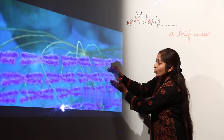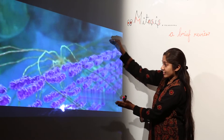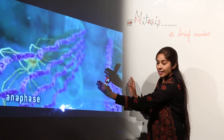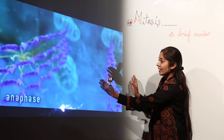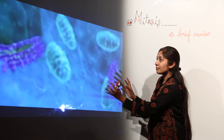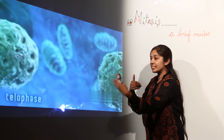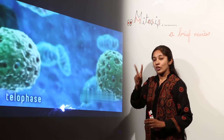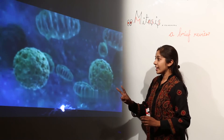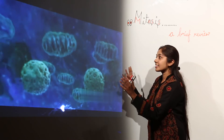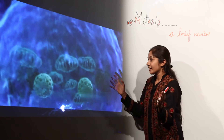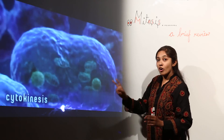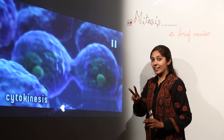During anaphase, these chromosomes move towards the poles. After this, the nuclear membrane reappears — reverse prophase starts — during telophase, and we now have two daughter nuclei. After that, the cytoplasm separates during cytokinesis, forming two daughter cells.